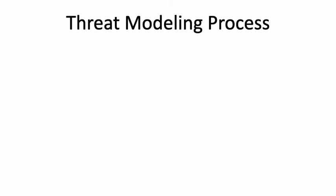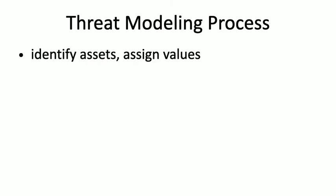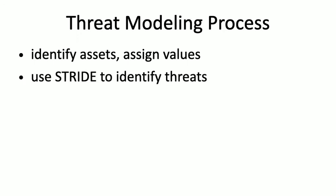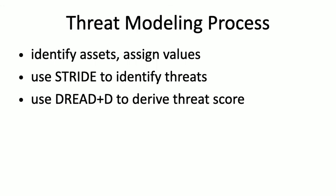To summarize our threat model process: identify assets and assign values — these values can be largely arbitrary, but you should be consistent within your organization and threat model as to the scale. In my example, I picked numbers from 0 to 10. Use STRIDE to identify threats, and DREAD+D to derive a threat score. If you're consistent in your use of these numbers, you then get a neat little list of things sorted by priority — what to focus on in your defenses.